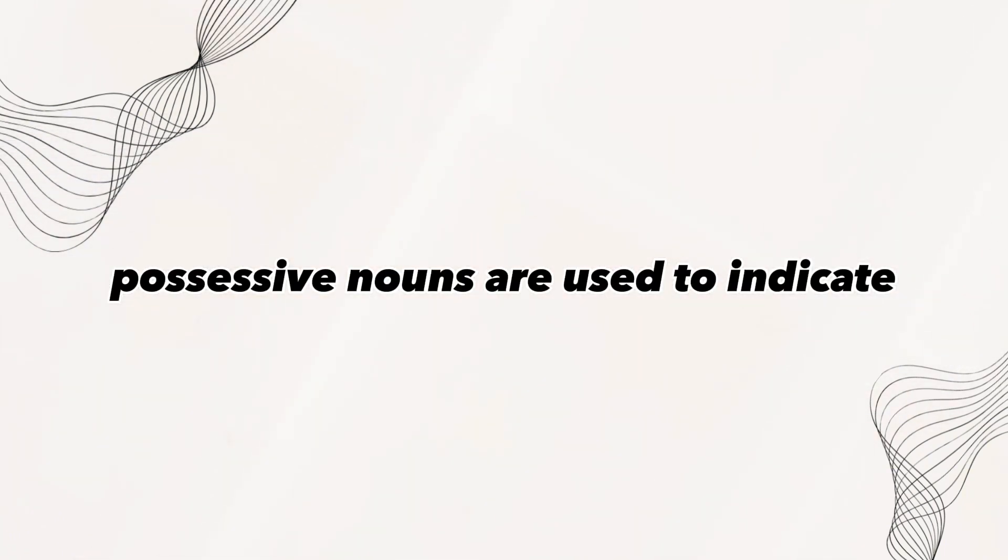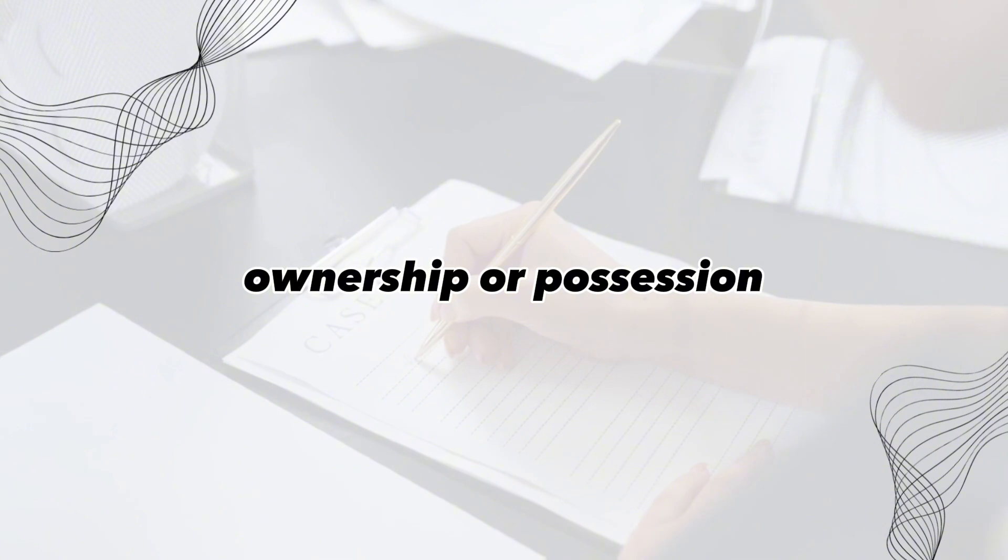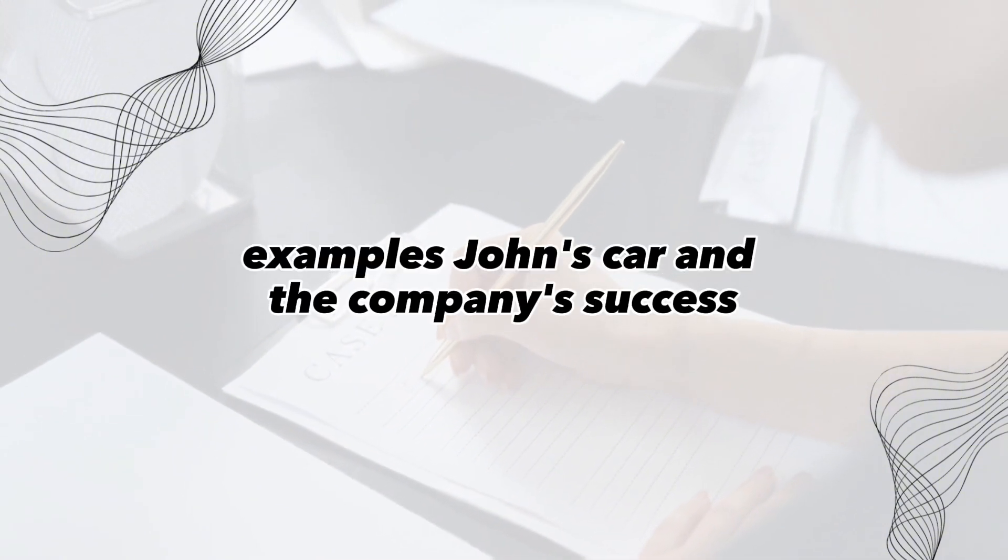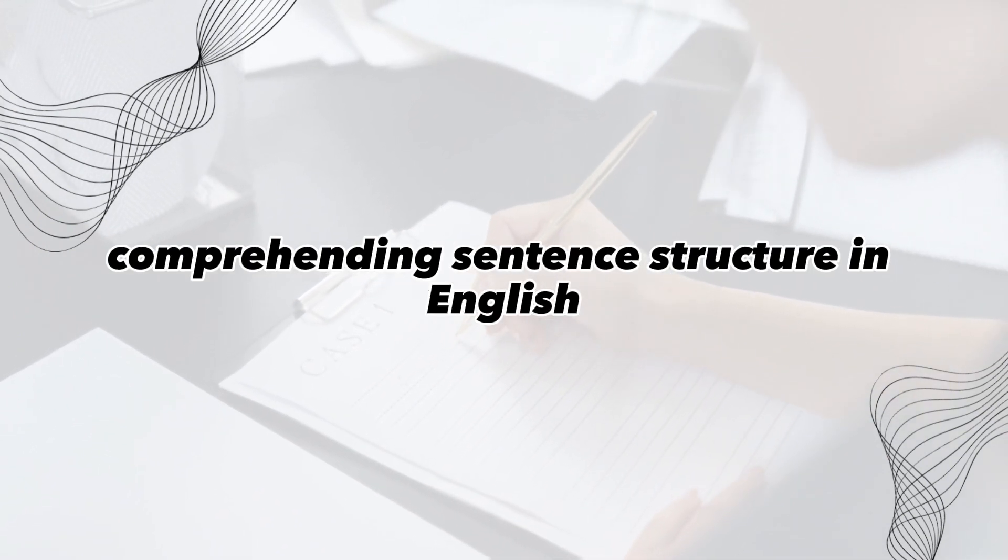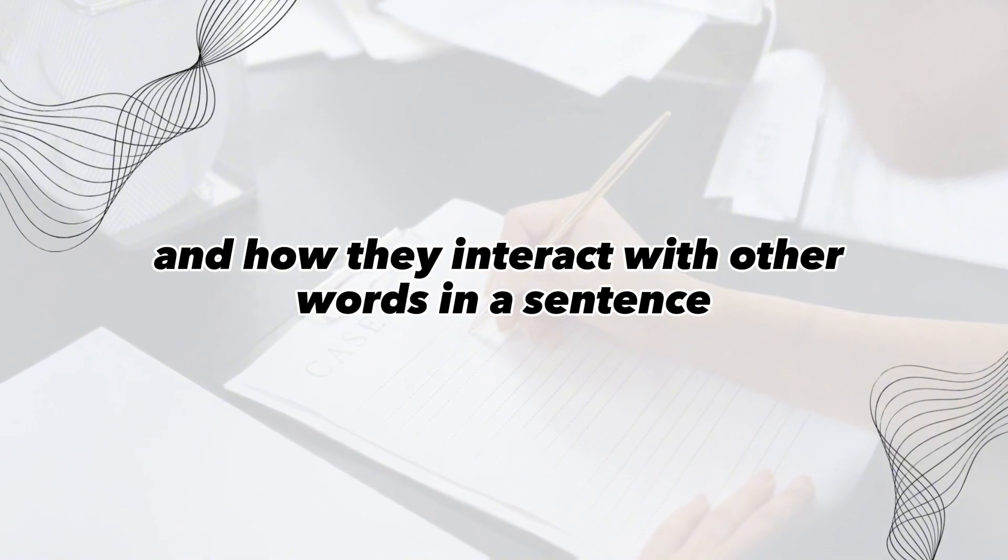Possessive noun. Possessive nouns are used to indicate ownership or possession. Examples: John's car and the company's success. Understanding these types of nouns is crucial in comprehending sentence structure in English and how they interact with other words in a sentence.